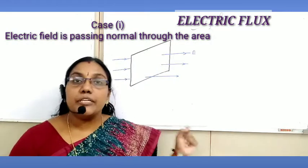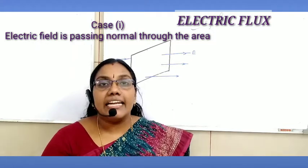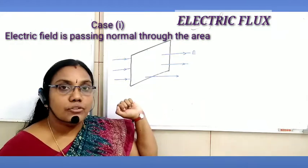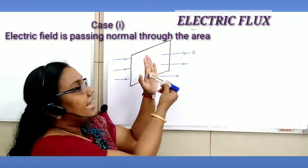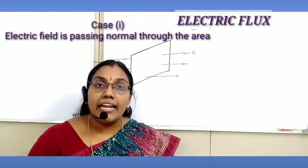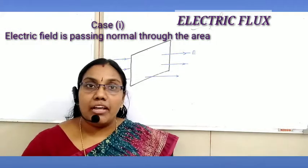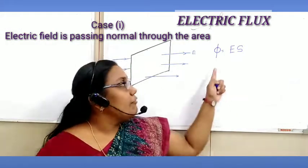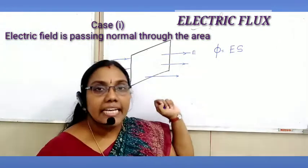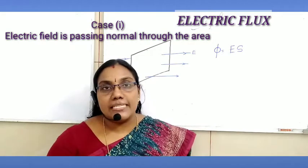In the first case, area is placed perpendicular to the direction of electric field, so the area vector and electric field are along the same direction. In this case, electric flux is given by φ = ES, where E is the electric field and S represents the area. Electric flux is usually represented by the letter phi.